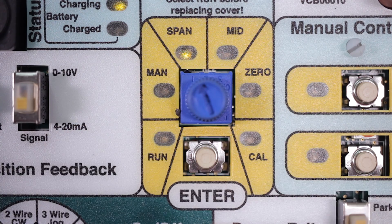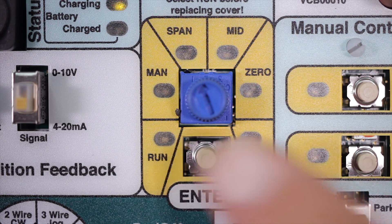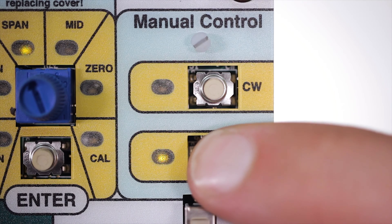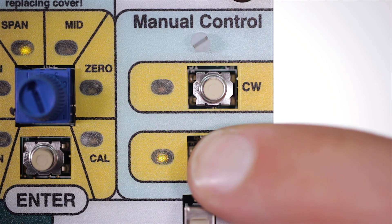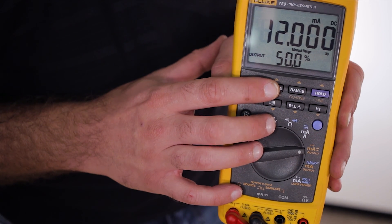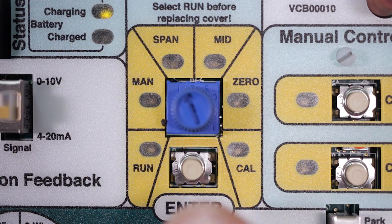Now move your operation mode selector switch to the span setting and hold down the enter button for two seconds until the LED is flashing. Use the counterclockwise button to manually drive the valve fully open. Send a 20 milliamp signal to the actuator from your loop calibrator. Then push the enter button.